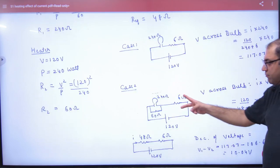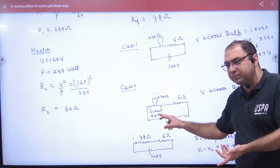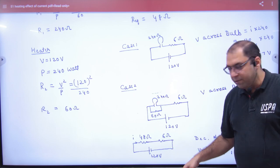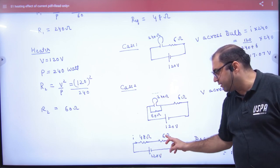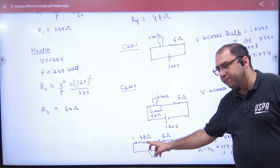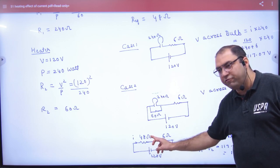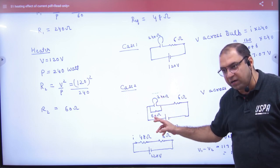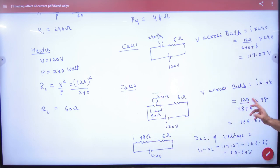Now, in the second case, I put a heater in parallel. In parallel, the equivalent resistance is 48 ohms. Then, let us find the current: 120 divided by 48 plus 6. In this case, the voltage will be I into 48. Whatever voltage is here will also be across the heater because it is connected in parallel. So I into 48 gives us 117 point something volts.